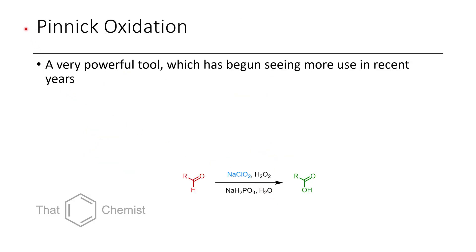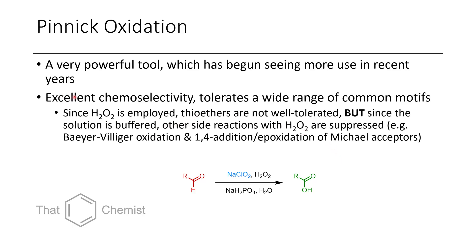The next oxidation method is the Pinnick oxidation — a very powerful tool because it's quite chemoselective. Because aldehydes have robust methods for their generation now, such as DMP oxidation, it's really easy to prepare aldehydes, and therefore carboxylic acids. It has excellent chemoselectivity and tolerates most functional groups. However, thioethers (also known as sulfides) are not well tolerated because they can be oxidized to the sulfoxide or sulfone by hydrogen peroxide. Because the solution is buffered, side reactions such as Baeyer–Villiger oxidation or 1,4-addition to Michael acceptors are not usually observed.